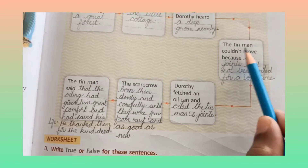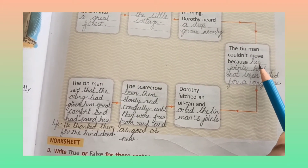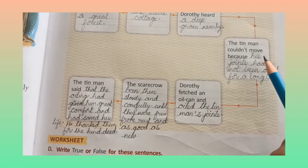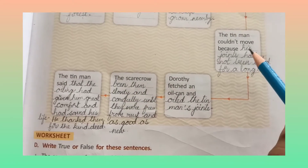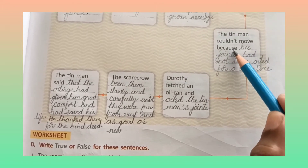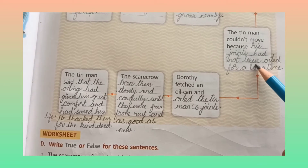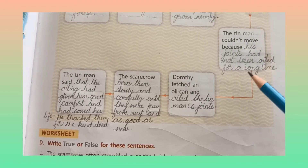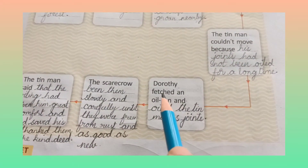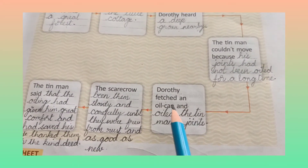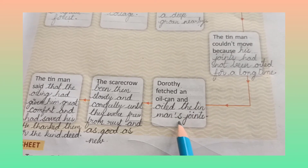Why could the tin man not move? Because his joints had not been oiled for a long time. So because his joints had not been oiled for a long time, Dorothy fetched an oil can and oiled the tin man's joints.